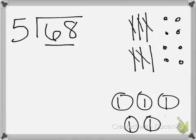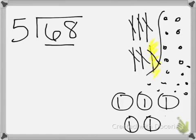So then they would realize they have 1 ten-rod left over, so they would have to break that up and make it into 10 more ones — counting 1 through 10. Now they should have 18 ones all together that they would want to put evenly into these 5 groups.